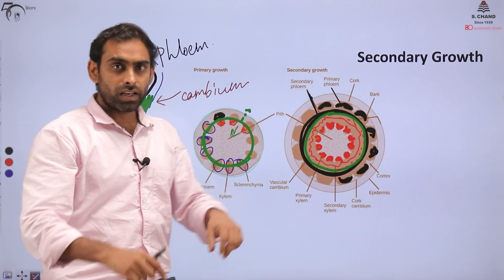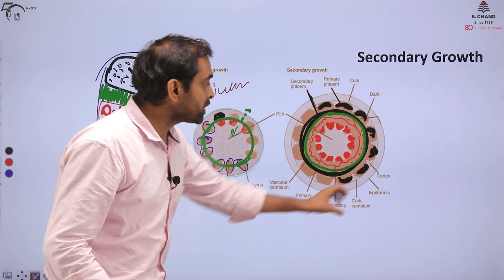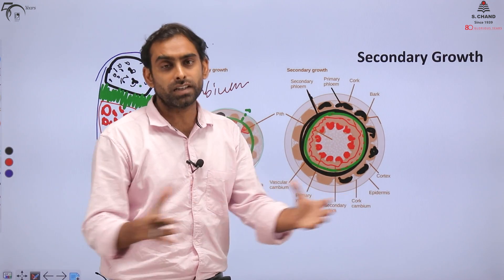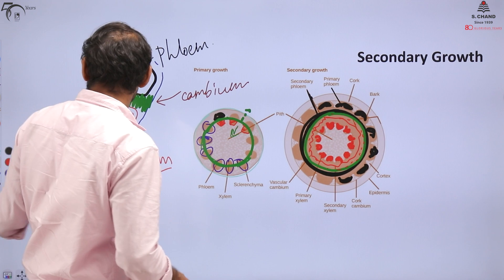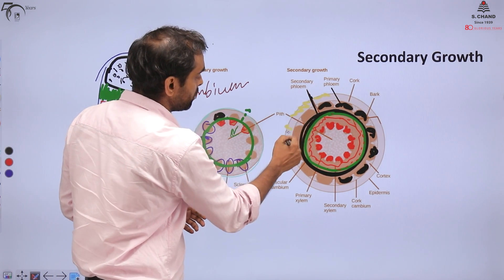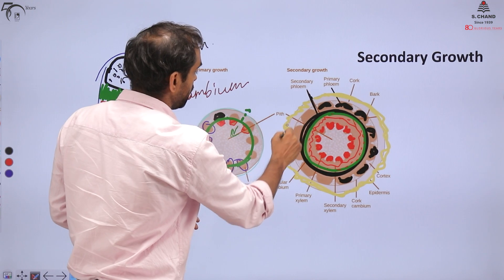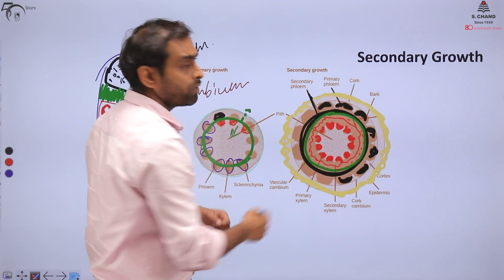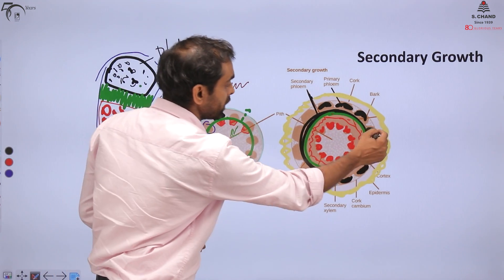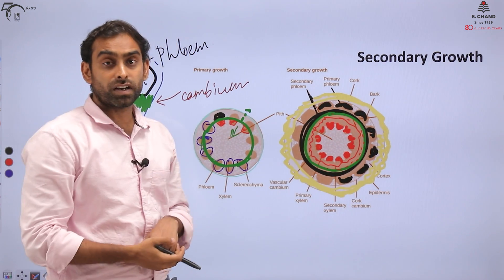So cambium on one side made xylem, on the other side made phloem. They are secondary xylem and secondary phloem. The old primary xylem and phloem became outdated, obsolete, and they stop working. There is a complete increase in circumference of xylem and phloem, that is, a complete new vascular bundle set formed. This is how plant will start growing in diameter.